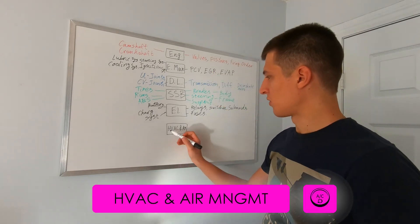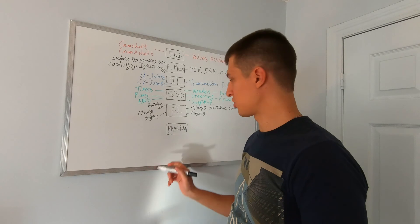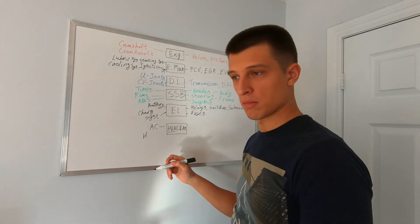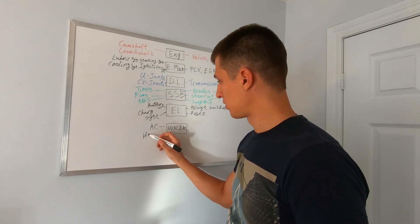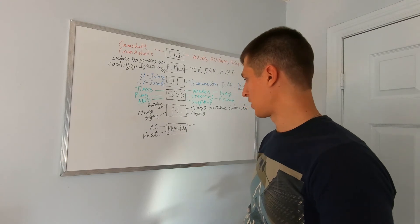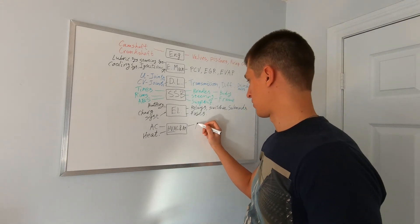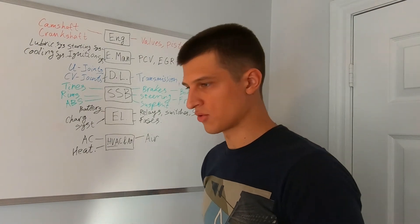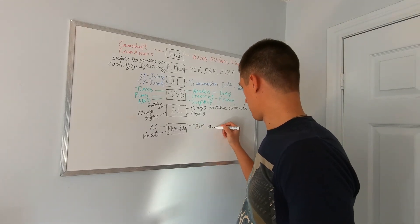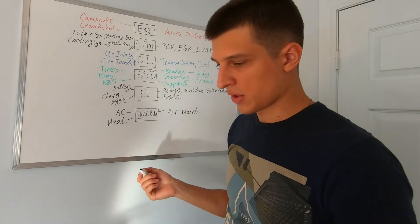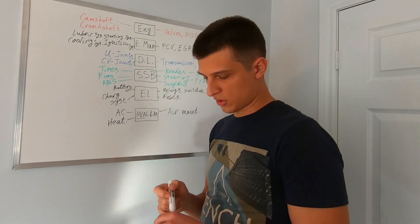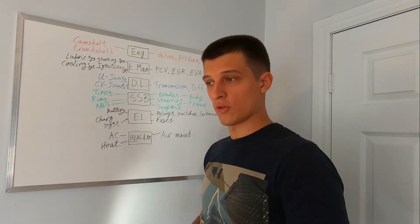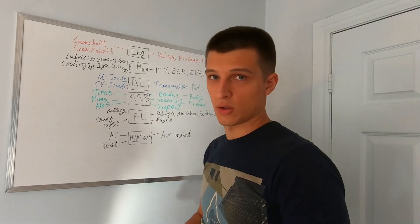And our last system is the HVAC and air maintenance. This is pretty much your air conditioning and heating in the car for the passengers and the driver, and of course your air maintenance. So that's the air that goes into the car for the driver and passengers. The air filter for the cabin would be in this category, whereas the air filter for the engine will actually be in the engine category.